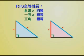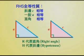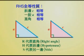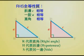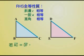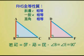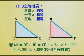这称为RHS全等性质。其中R代表直角Right Angle，H代表斜边Hypotenuse，S代表另一边Side。也就是说在三角形ABC和三角形DEF中，线段AC等于线段DF，线段AB等于线段DE，角B等于角E等于90度，这两个三角形就会全等，我们称为RHS全等性质。